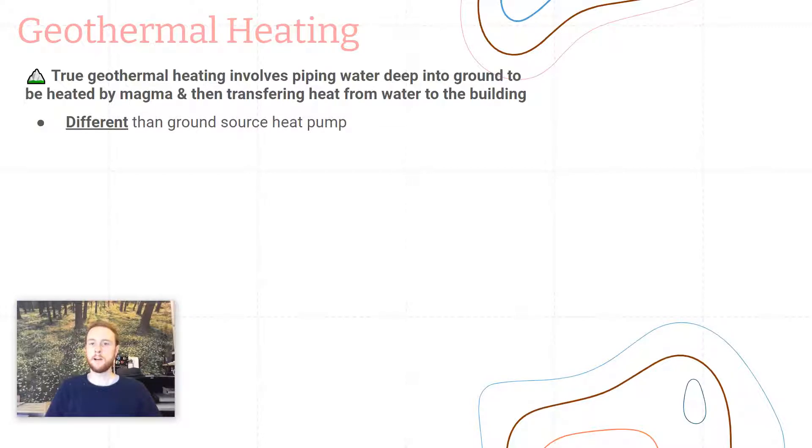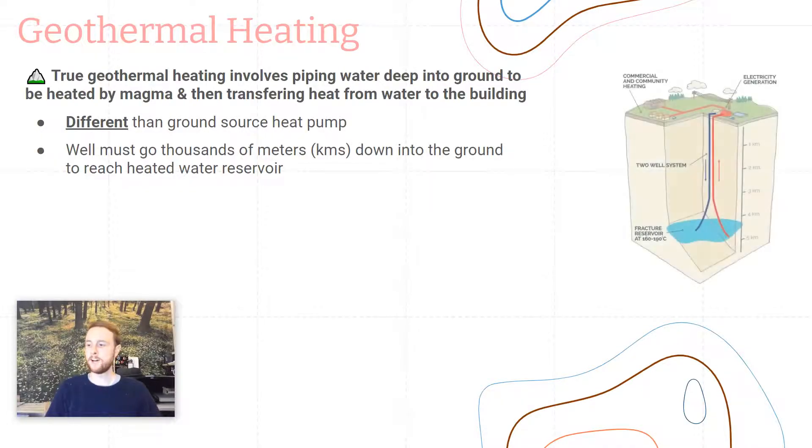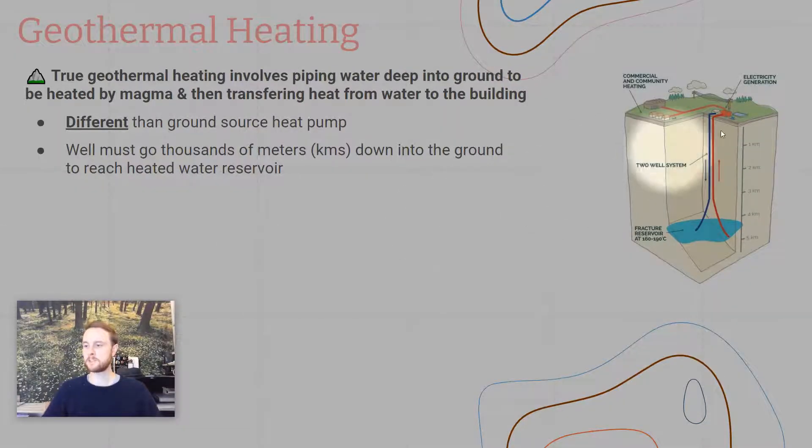In a ground source heat pump, we're just taking advantage of that ambient 50 to 60 degree ground temperature versus in geothermal, you're going to go down thousands of meters. So you probably don't have a true geothermal heat source in your backyard unless someone drilled down five kilometers to get to that magma heated rock layer. And so if we look at this diagram here, this can help us understand, you're going to have to go extremely deep in the earth. And that's because the earth's crust or the lithosphere is pretty thick. So you're not going to be able to go down and reach rocks that are close enough to magma to be heated by digging a 10-foot hole in your backyard. You're going to have to go down thousands of meters.